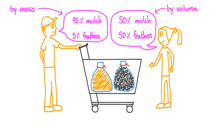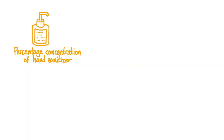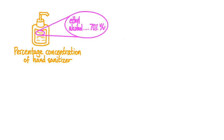In chemistry, we don't normally deal with mulch and feathers. We usually apply percentage concentration to the amount of solute present in a solution. One household example can be found on a bottle of hand sanitizer. If we look on the back of a bottle of hand sanitizer, we may see it say: ethyl alcohol, 70% V/V.